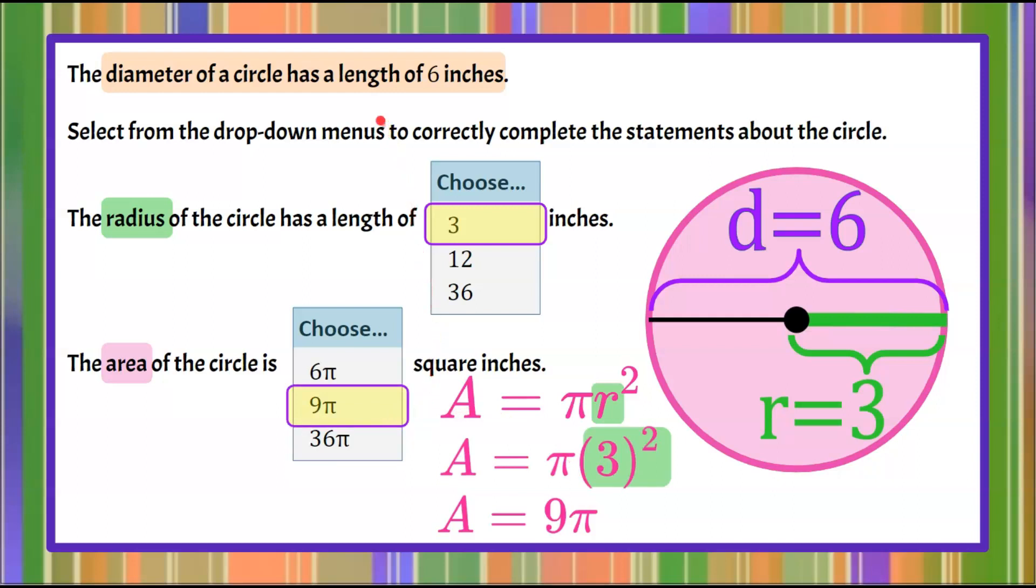So when we're given a diameter of a circle to be six inches, we know its radius is three, and its area is nine pi.